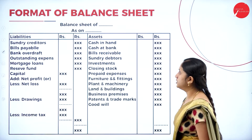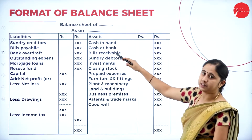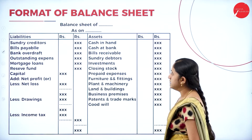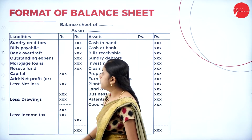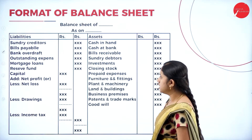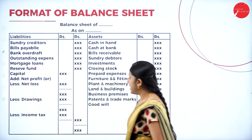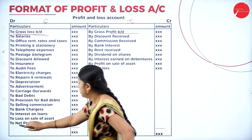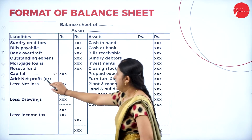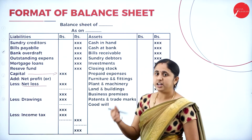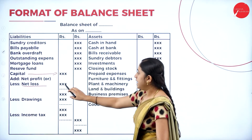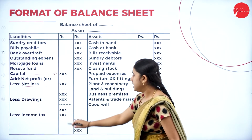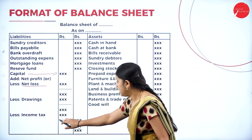Next, the format of the balance sheet. The balance sheet of the company is prepared as on 31st March or 31st December for the particular year, showing liabilities and assets. Liabilities include sundry creditors, bills payable, bank overdraft, outstanding expenses, mortgage loans, reserve funds, and capital. Capital is written in the inner column; net profit is added and net loss is deducted from capital. Drawings — personal withdrawals — and income tax are also deducted to arrive at the final capital amount in the outer column.